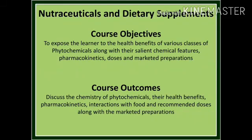The course objective mentions exposing the learner to health benefits of various classes of phytochemicals along with their salient chemical features, pharmacokinetics, doses, and marketed preparations. At the end of this topic, the expected outcome is that students are able to discuss the chemistry of phytochemicals, their health benefits, pharmacokinetics, and recommended doses along with marketed preparations.